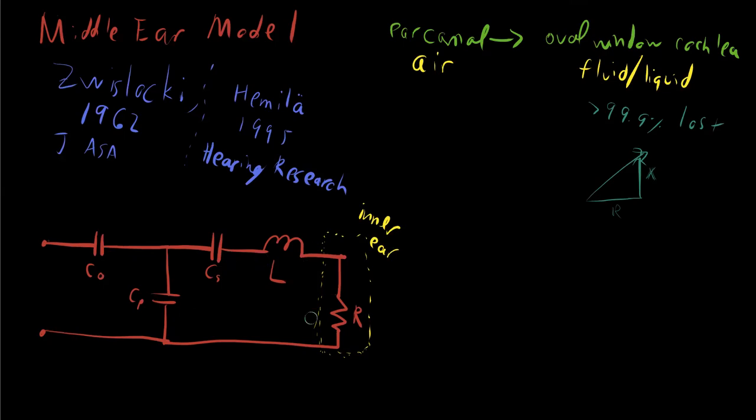And each of these actually means something quite intuitive. C naught here is the compliance of the middle ear air cushion. Between the tympanic membrane and the inner ear, there's a bunch of air that is effectively encased. It's not communicating usually with the outside. That has a compliance, right, because it has stretchiness, that is different than the incoming compliance of the ear canal.